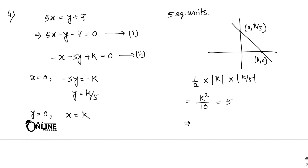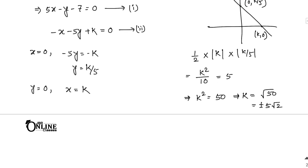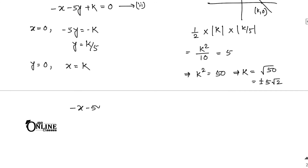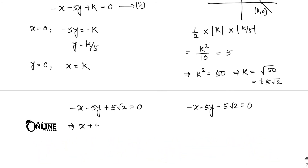From k² = 50, we get k = ±5√2. Substituting into equation 2: for k = +5√2: -x - 5y + 5√2 = 0, i.e., x + 5y - 5√2 = 0. For k = -5√2: -x - 5y - 5√2 = 0, i.e., x + 5y + 5√2 = 0. These are the two final answers.